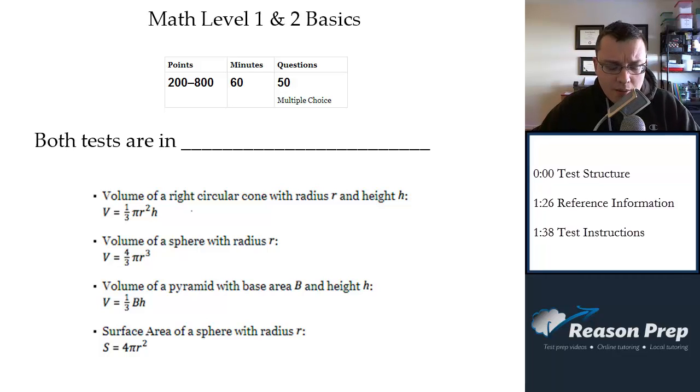Let's talk about the basics of the Math 1 and Math 2 tests. They're both scored the same, from 200 to 800, and we'll have more to say about scoring in the next video. You're given an hour to complete each test, so an hour for Math 1, an hour for Math 2. Remember the way it works with the subject tests, it's an hour per test, every test is an hour.